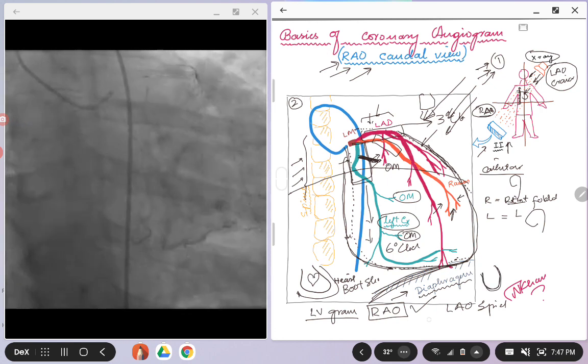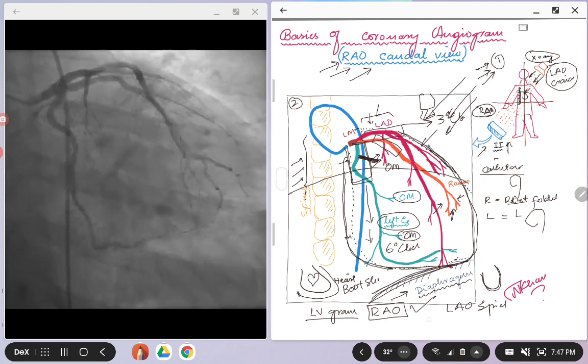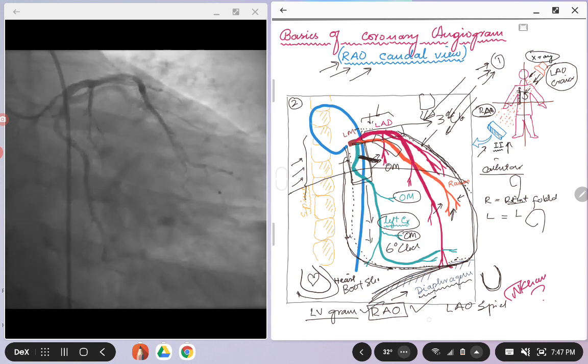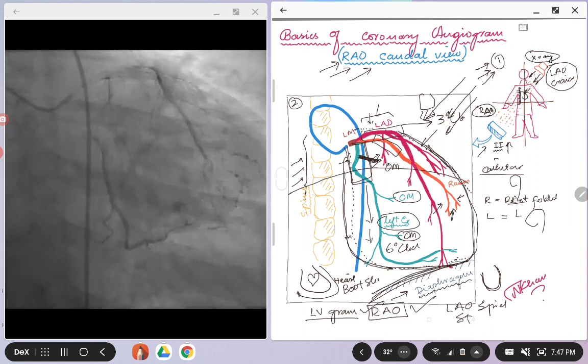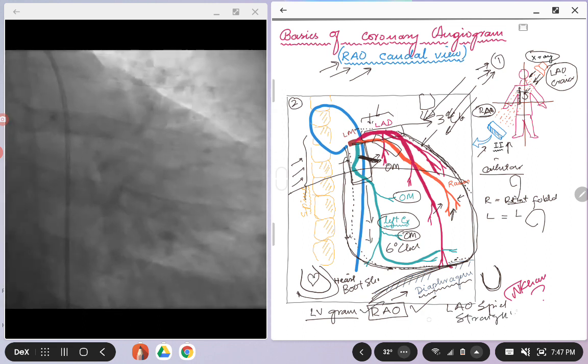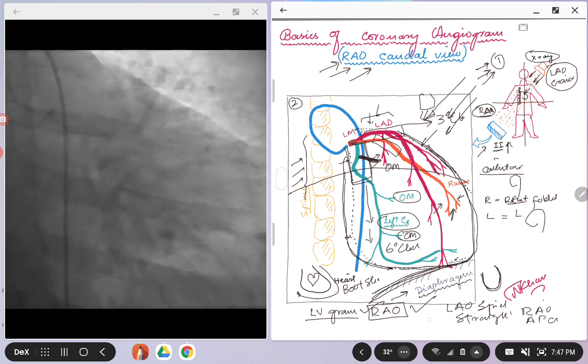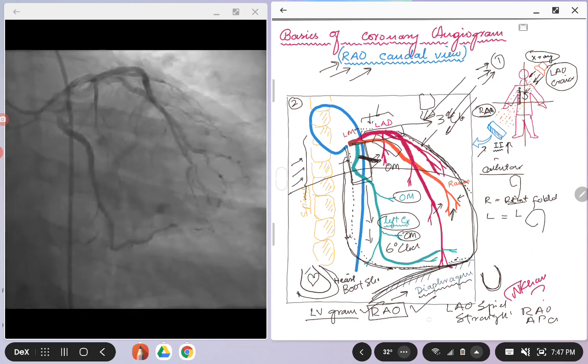As compared to the LAO view, as we talked about the spider view, the heart would be somewhat kind of rounded and you might not see the whole walls of the left ventricle coming in. So either you can do an RAO caudal or you can do just a straight RAO or maybe an AP cranial view if you want to look at the wall motion abnormalities.